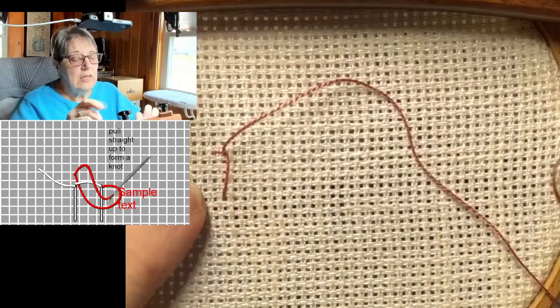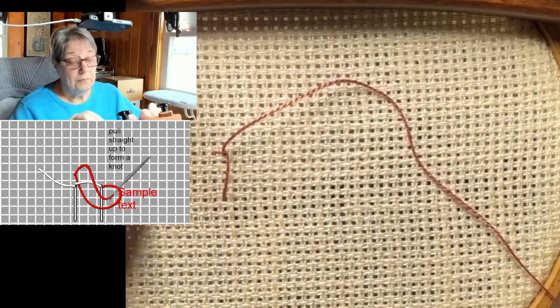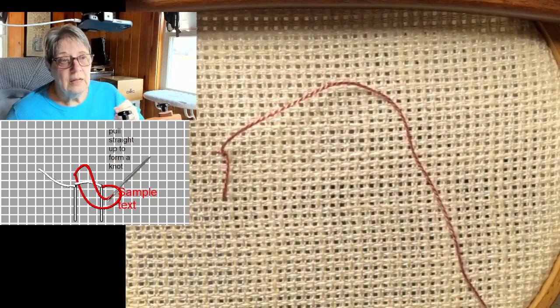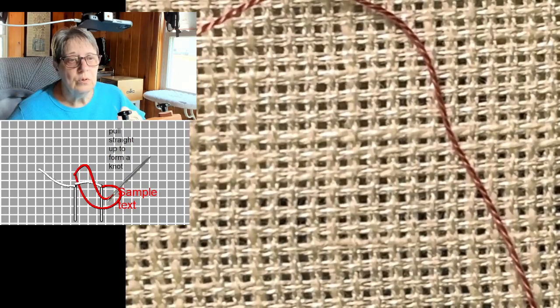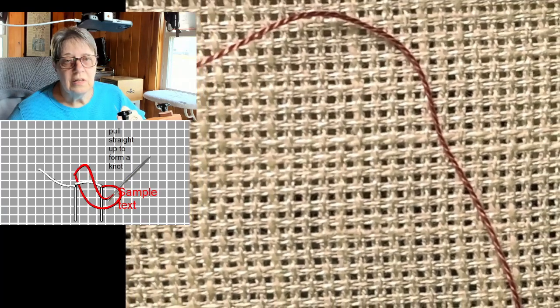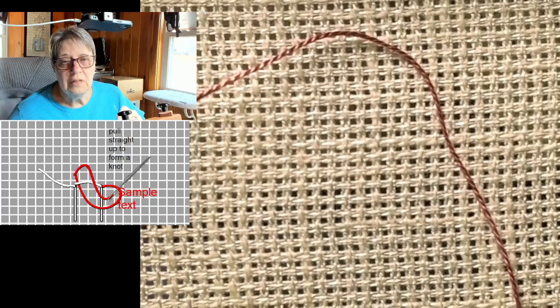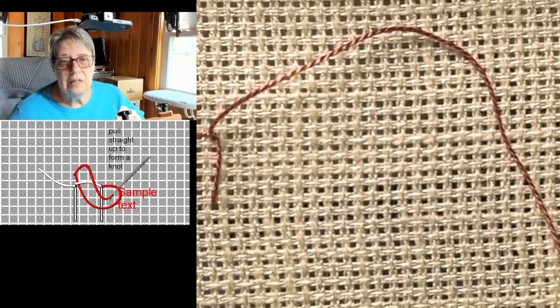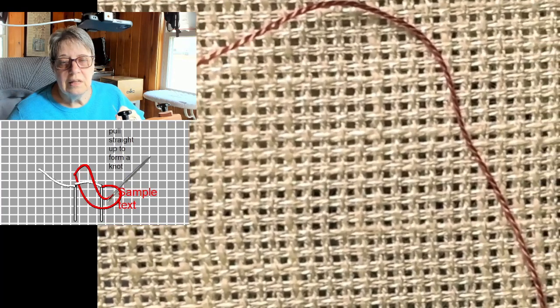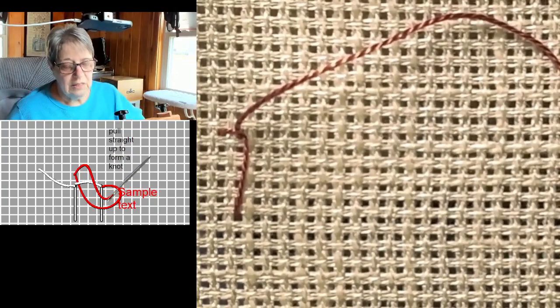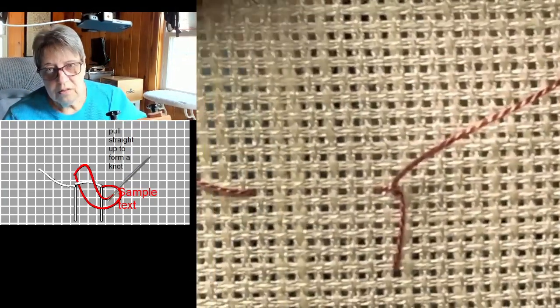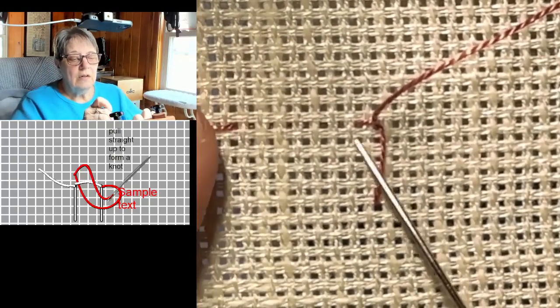Now, you see that it made a little L. This and this forms an L. Let me see if I can get you in just a smidgen closer. Now, you can see, here we go. There's a little L here. What you want to make is a knot on top of this stitch.